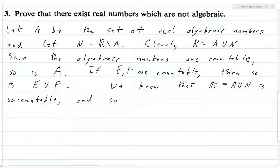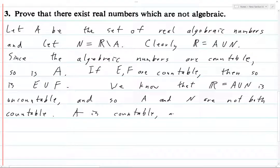And so, A and N are not both countable. A is countable, and hence N must be uncountable.